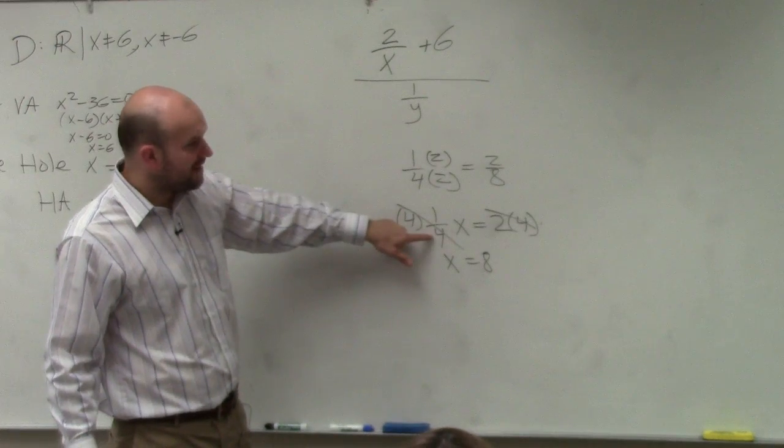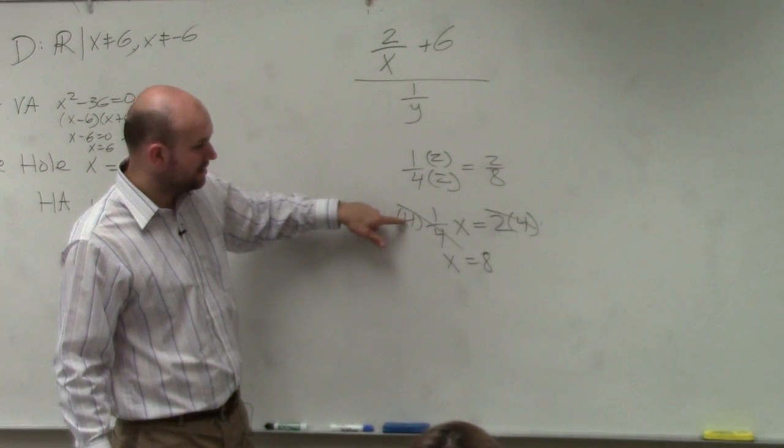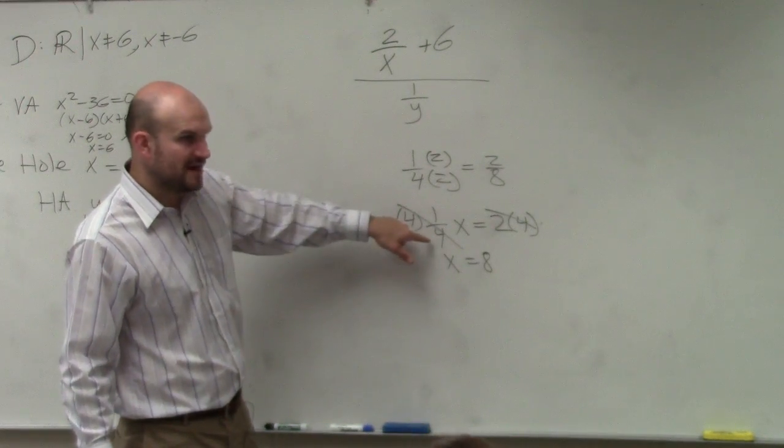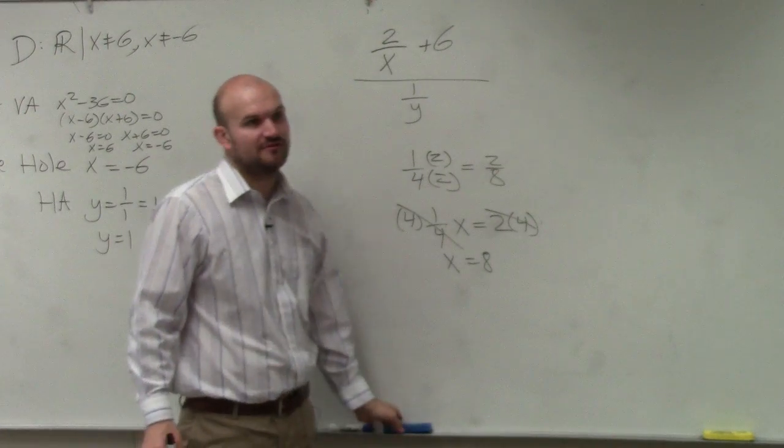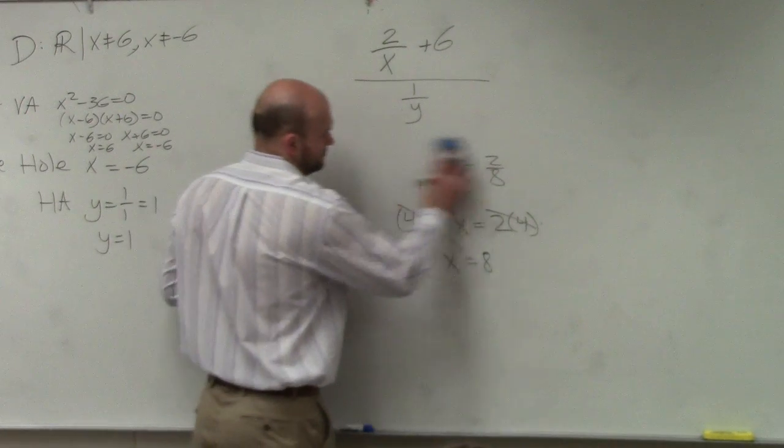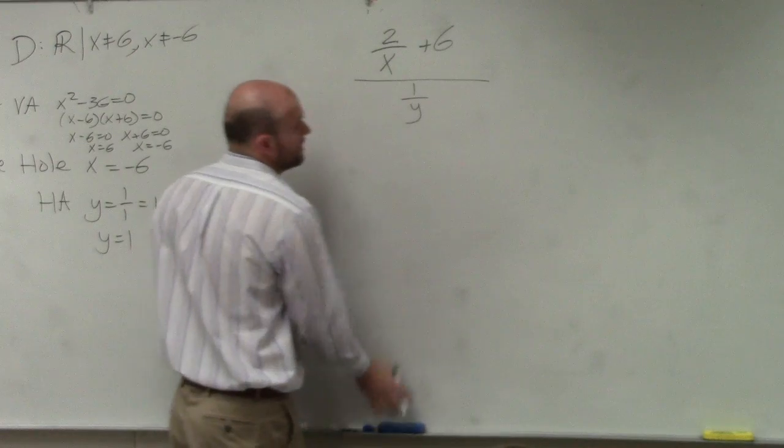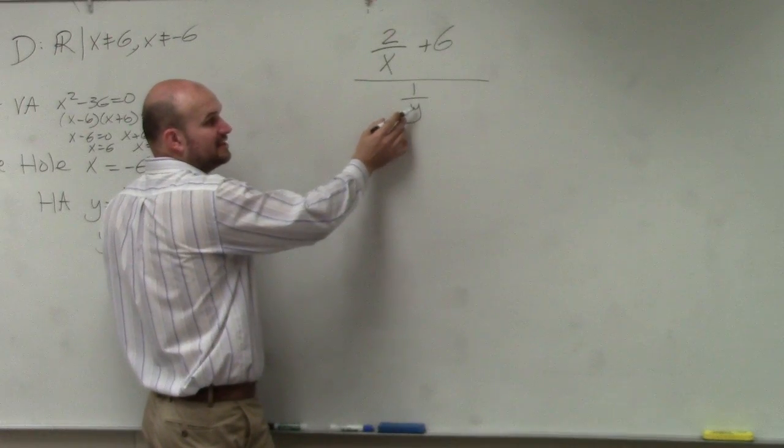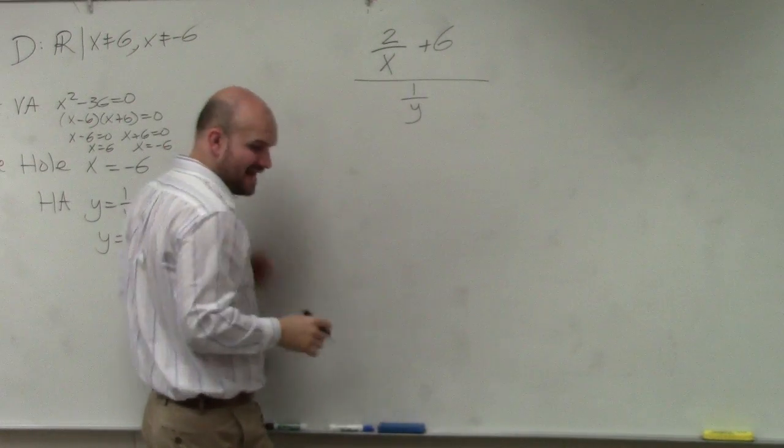So if you have a fraction, if you multiply by 4, that will get rid of the fraction. If you multiply by its reciprocal, that gets rid of the fraction. Now, what we're going to want to do here is get rid of y in the denominator and x in the denominator.